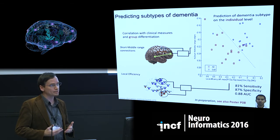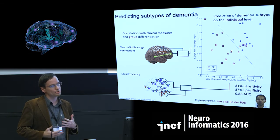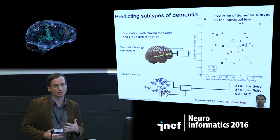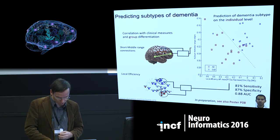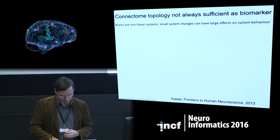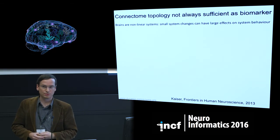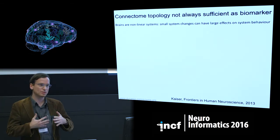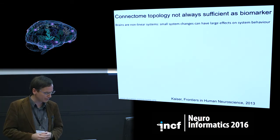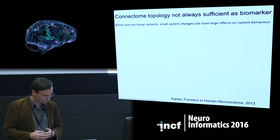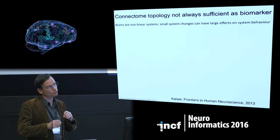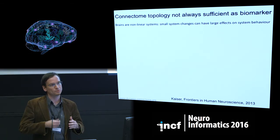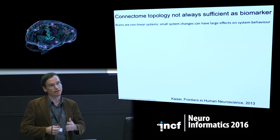So just looking at brain connectivity already seems to help. Unfortunately, this is not always the case. As heard in a previous talk, you might have very similar connections but very different dynamics. Because brains are nonlinear systems, a very small change in the network can lead to a very large change in dynamics.